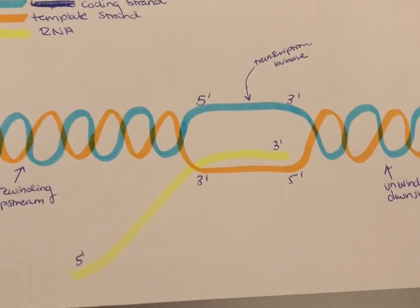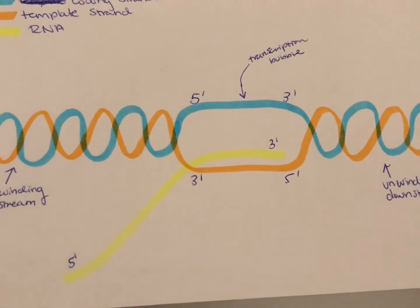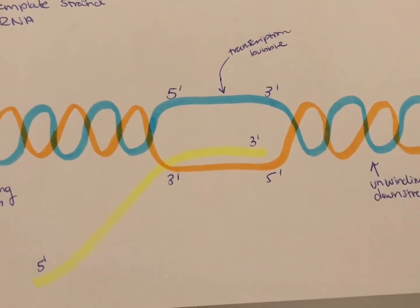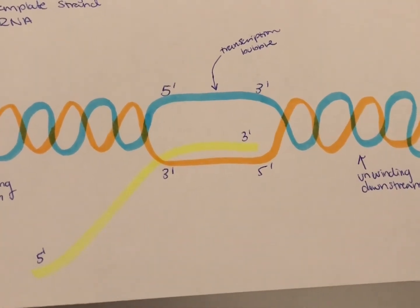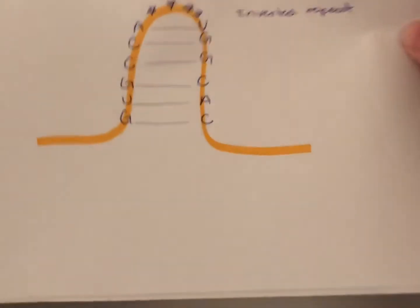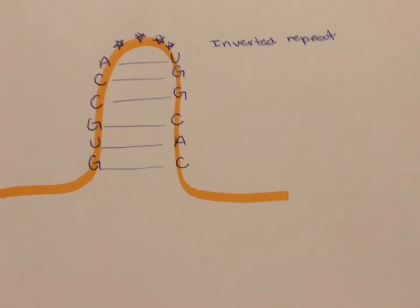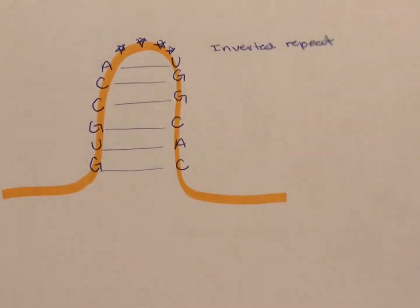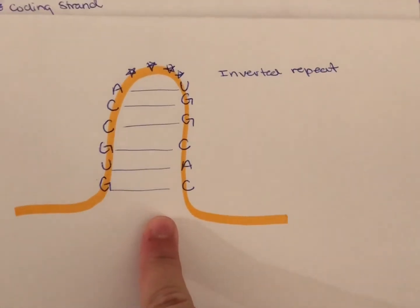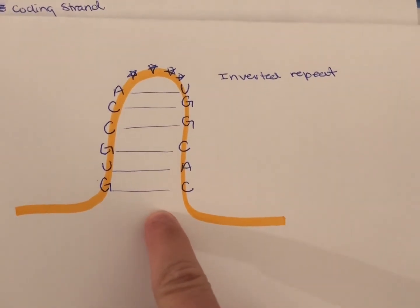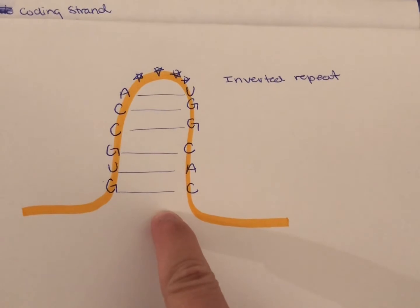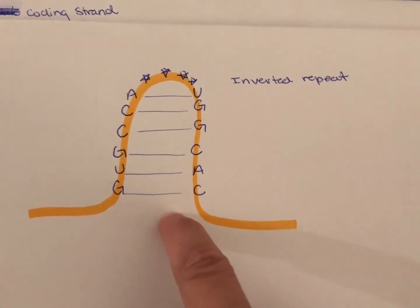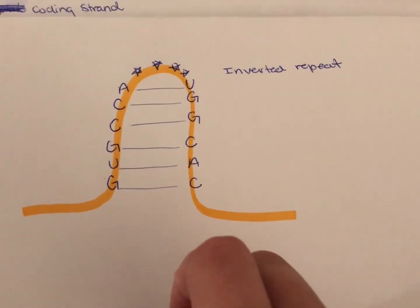Lastly, in transcription we have the termination of transcription, and this is done in one of two ways. The first way is called rho-independent termination. This termination occurs when inverted repetition leads to a hairpin loop in the DNA. As seen in this diagram, that inverted repetition causes a loop where these nucleotides match up. This can trigger termination of transcription by forming an AU chain, which has very weak bonding and therefore allows the RNA to separate from the DNA.